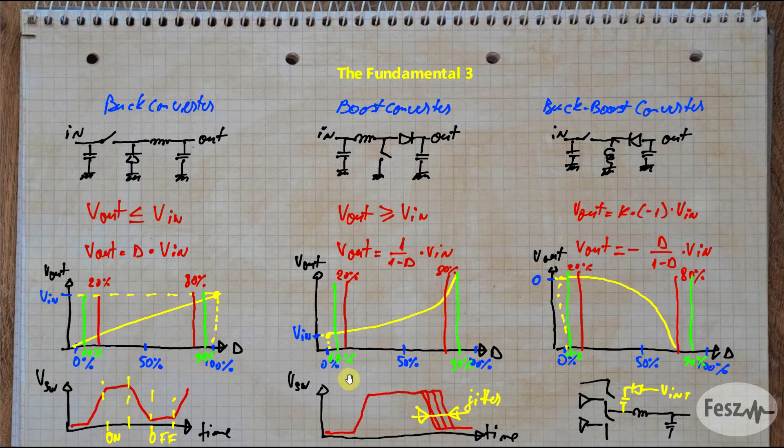So if the duty cycle range is limited, well so is the output range. You can no longer get any voltage, but rather you have a very clear limited interval. So when the ratio of input to output would force a very large or very small duty cycle, the base topologies are no longer adequate.